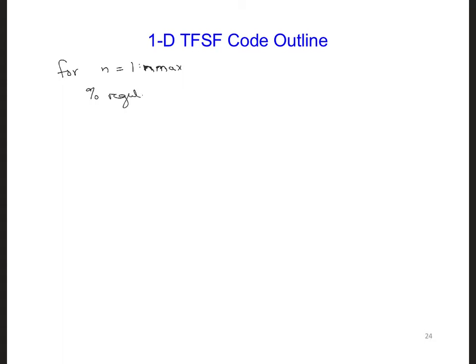So we can have regular updates. I'd probably put the Hy ints updates first, the incident grid. And then you can have the regular updates on the Hy fields, which is our primary grid.